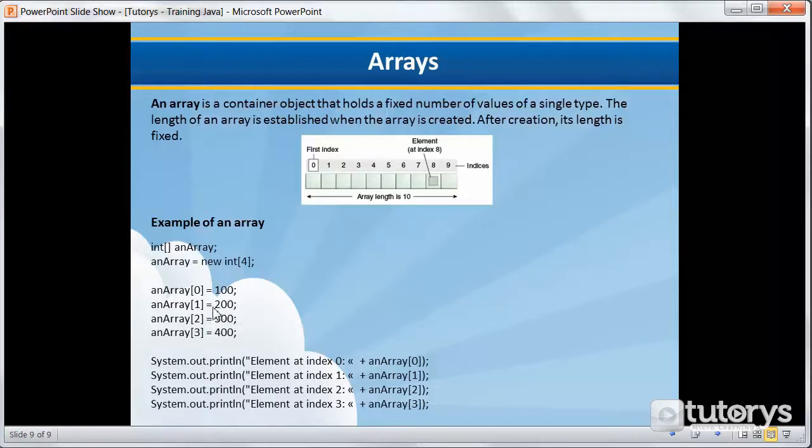Then we are assigning the value of 200 to the element at index 1, et cetera. And then right at the end of our code here, we are printing out the values of the elements in question.